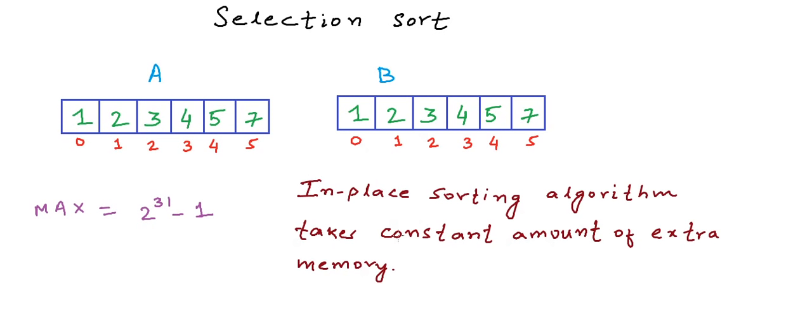An in-place sorting algorithm takes constant amount of extra memory for sorting a collection. In this case, the amount of extra memory will be proportional to the size of the input array A. We can do something similar where we will select the minimum element at each step. But we will not have to use this extra array, this extra memory and the algorithm will be in-place.